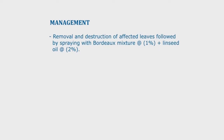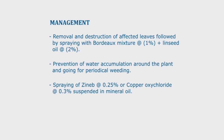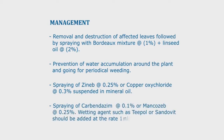Management of Sigatoka leaf spot includes removal and destruction of affected leaves, followed by spraying with Bordeaux mixture at 1% with linseed oil at 2%. Prevention of water accumulation around the plant and periodic weeding. Spraying Zineb at 0.25% or copper oxychloride at 0.3% suspended in mineral oil. Spraying Carbendazim at 0.1% or Mancozeb at 0.25%. Wetting agents such as Triton or Sandovit should be added at 1 ml per litre of water.